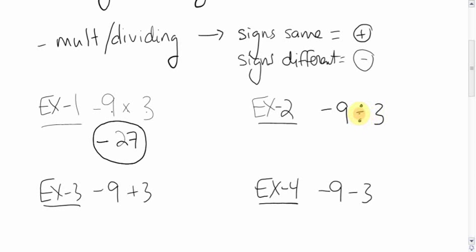Negative nine divided by three. In this case, you check if they're different or the same. They are different, negative and positive, so they are different signs. The answer is negative. Nine divided by three is three.